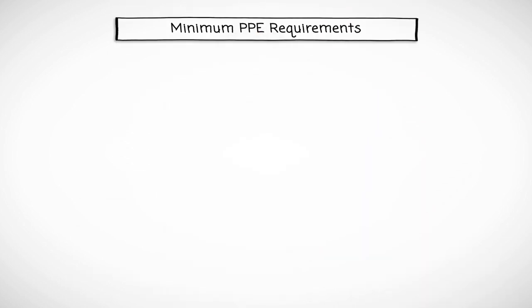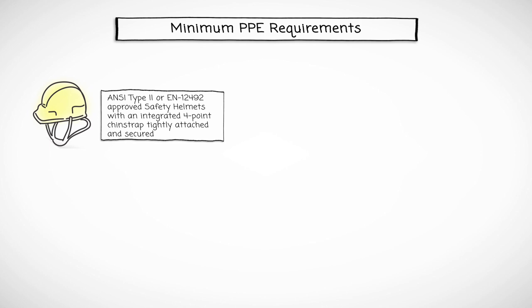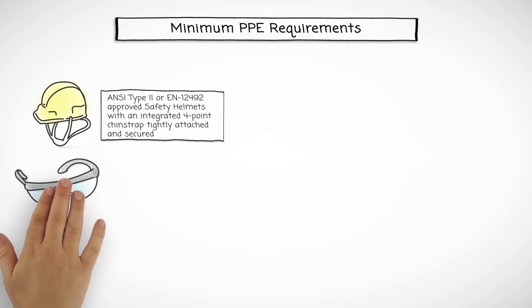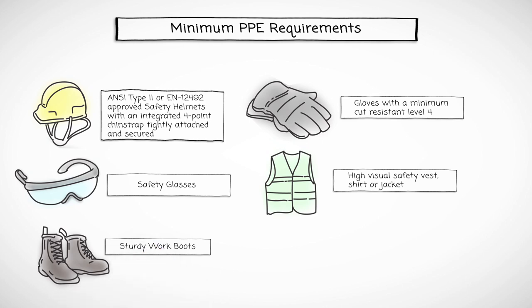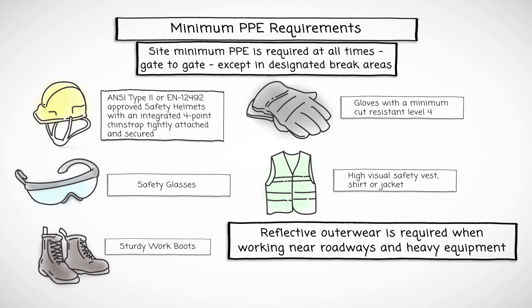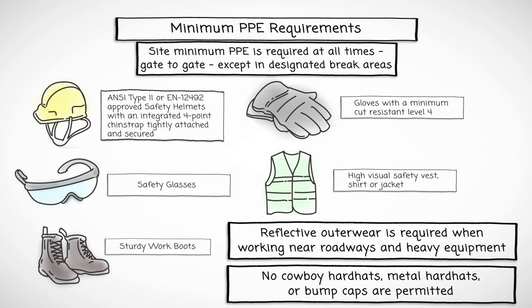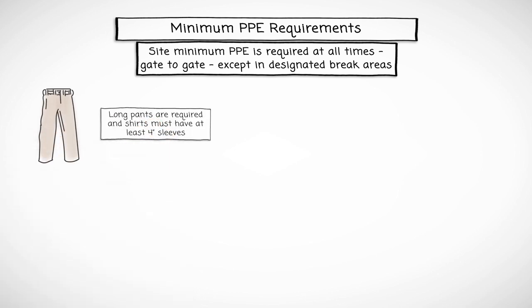Turners minimum PPE requirements include ANSI Type 2 or EN 12492 approved safety helmets with an integrated 4-point chin strap tightly attached and secured. Safety rated glasses with side shields. Cut level 4 gloves. High visual shirt, vest or jacket. And sturdy work boots. This minimum PPE is to be worn at all times, gate to gate, except when in designated break or meeting areas. Reflective outerwear is required when working near roadways and near heavy equipment. No cowboy hard hats, metal hard hats or bump caps are permitted. Long pants are required and shirts must have at least a 4-inch sleeve.